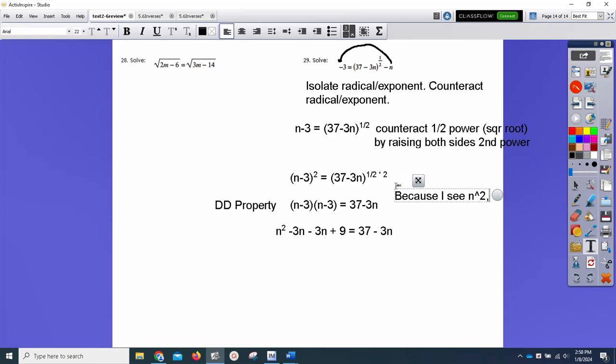And because I see n to the second, I'm going to set the equation equal to 0 because that's what we do. I'm going to do that by moving everything left. So I have a negative 6n on the left. If I add 3n, I'll be at minus 3n. And 9 minus 37 is negative 28. And now I'm going to factor. My favorite word, factor. n minus 7, n plus 4. So my n values are 7 or n equals negative 4.